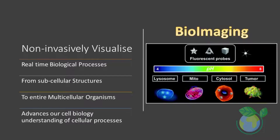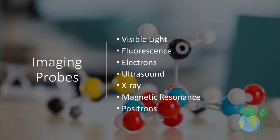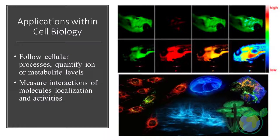Bioimaging relates to methods that non-invasively visualize biological processes in real time. It spans the observation of subcellular structures and entire cells, over tissues, up to entire multicellular organisms. Among others, it uses light, fluorescence, electrons, ultrasound, x-ray, magnetic resonance, and positrons as sources for imaging.